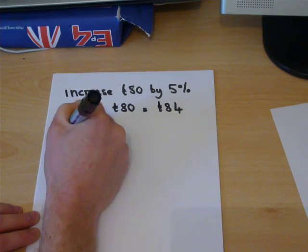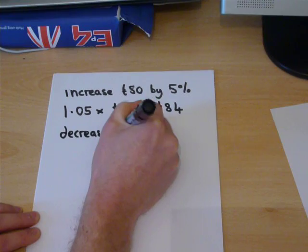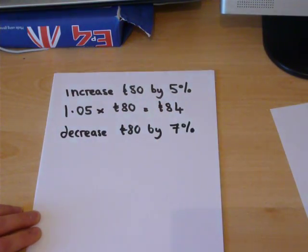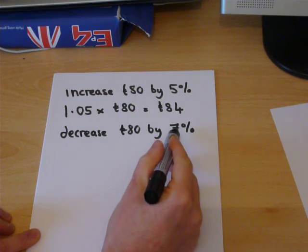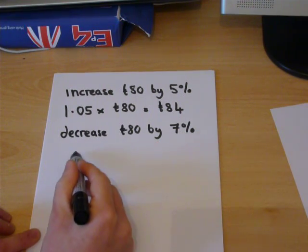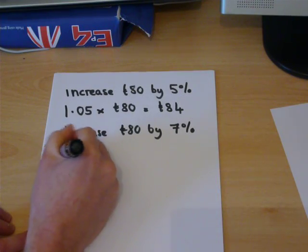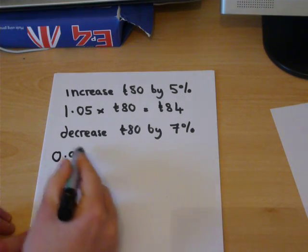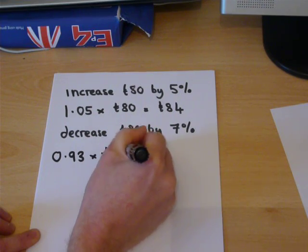Suppose we want to decrease 80 pounds by 7%. In this case, we've taken 100%, which is the total amount, and deducted 7%. Now, 100 take 7% gives us 0.93 as a whole. If we then times that by 80,